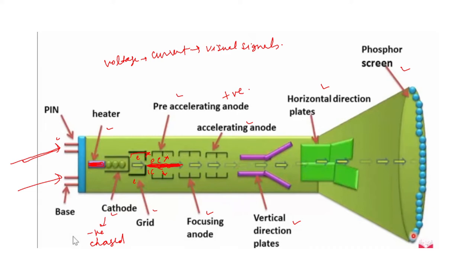After the pre-accelerating anode, the electrons pass through the focusing anode, which focuses them into one direction or one line. Then the accelerating anode further increases their speed. So we have the focusing anode to direct the beam and the accelerating anode to enhance the speed of the electrons.